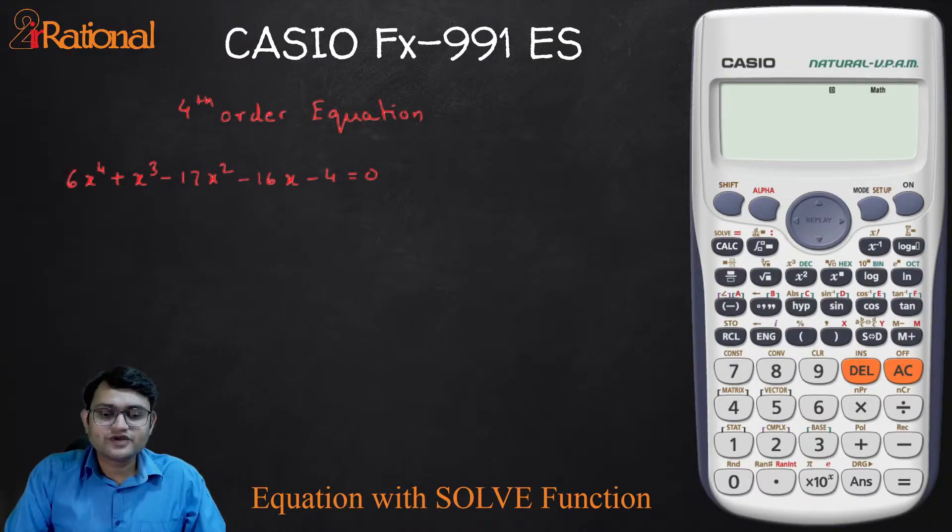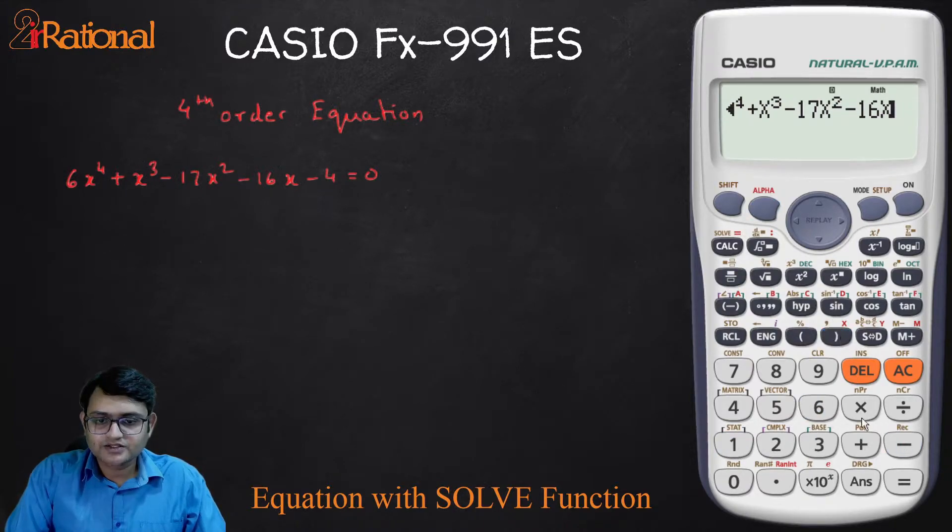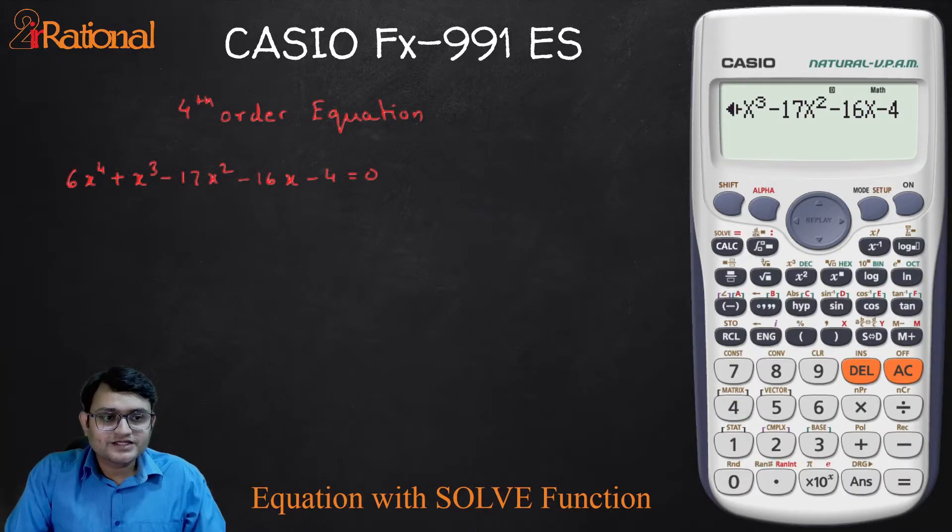So the first thing we need to do is type our equation in the comp mode. So I have 6, for X I need alpha and this closing bracket raise to 4, come down plus X cube minus 17 X square minus 16 X minus 4.